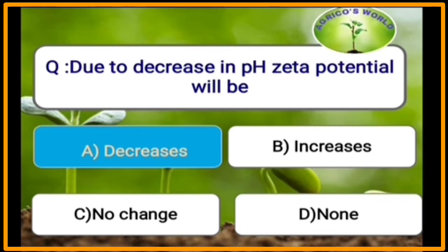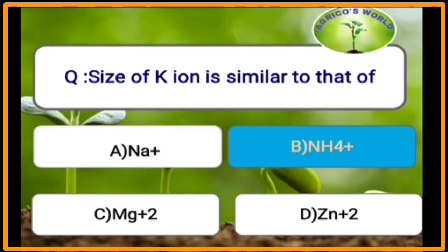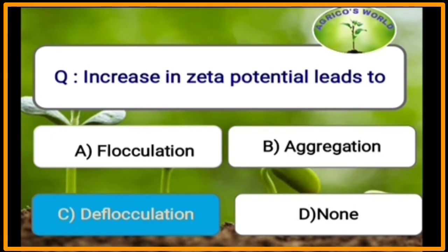Due to a decrease in pH, zeta potential will be decreased. The size of the potassium ion is similar to that of the ammonium ion. An increase in zeta potential leads to deflocculation.